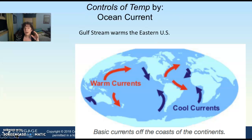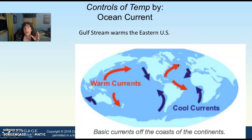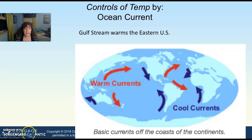There are also controls of temperature by ocean current. For instance, our eastern seaboard is really warmed by the Gulf Stream — a warm current that comes out of the equator and brings warm water toward the coastal regions of the eastern United States. There are cold currents as well that arise from the polar regions.